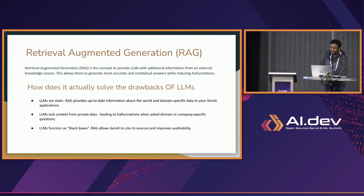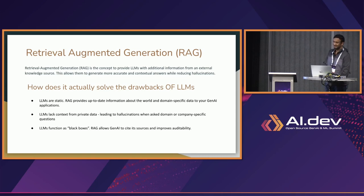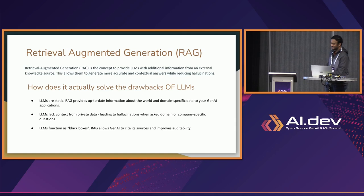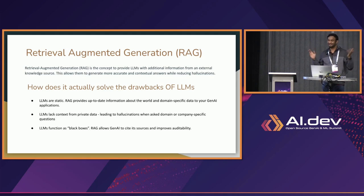Most of the LLMs are trained on static datasets and they are frozen in time. You might have used ChatGPT or any other LLM systems. If you ask some question which is very latest, something like a sports event that might have occurred in the recent past, it will just say, hey, I'm trained only until this date, I don't have information, and then it will just raise its hands.